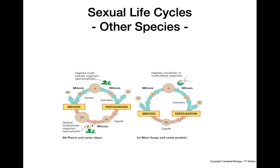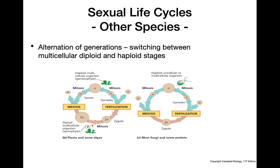In other species, something important we see is alternation of generations — where organisms switch between multicellular haploid and multicellular diploid stages. The multicellular diploid stage is called the sporophyte, and the multicellular haploid stage is called the gametophyte. Something similar occurs in fungi and some protists, which also alternate between multicellular haploid and diploid stages.